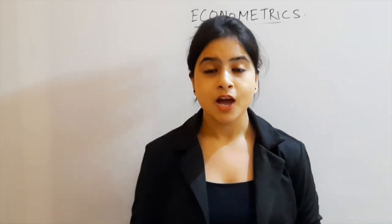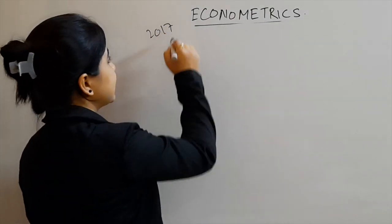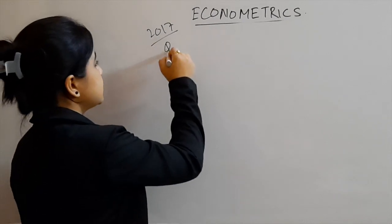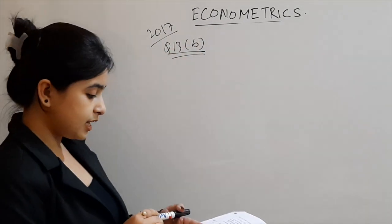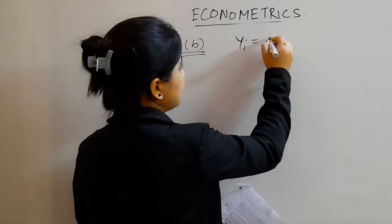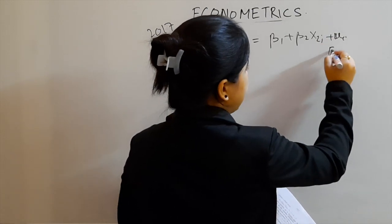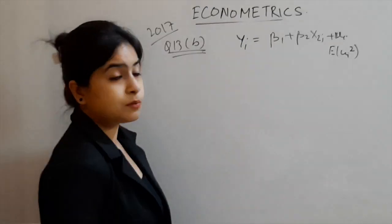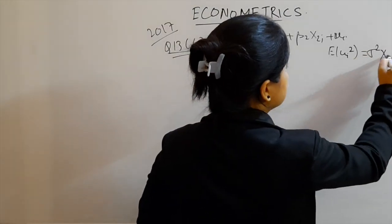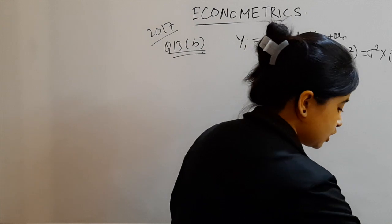Hello everyone, and a warm welcome to Economics Media. Today we are here for the second part of IES 2017 question number 13B. The part is econometrics and the topic is heteroscedasticity. We are given the model yᵢ = β₁ + β₂x₂ᵢ + uᵢ, along with the information that E(uᵢ²) is not constant and equals σ²xᵢ².